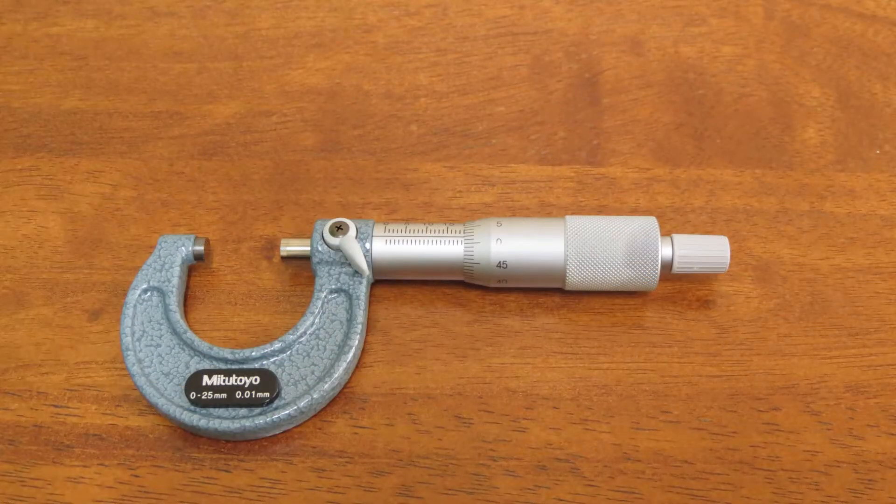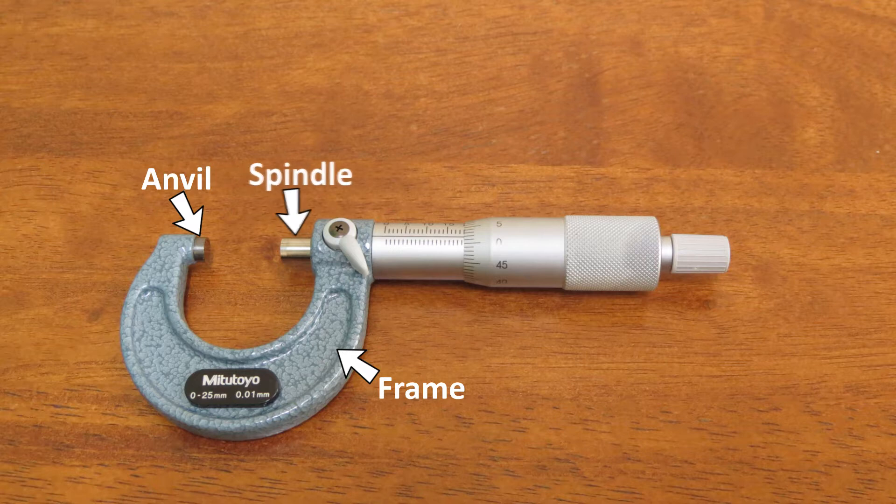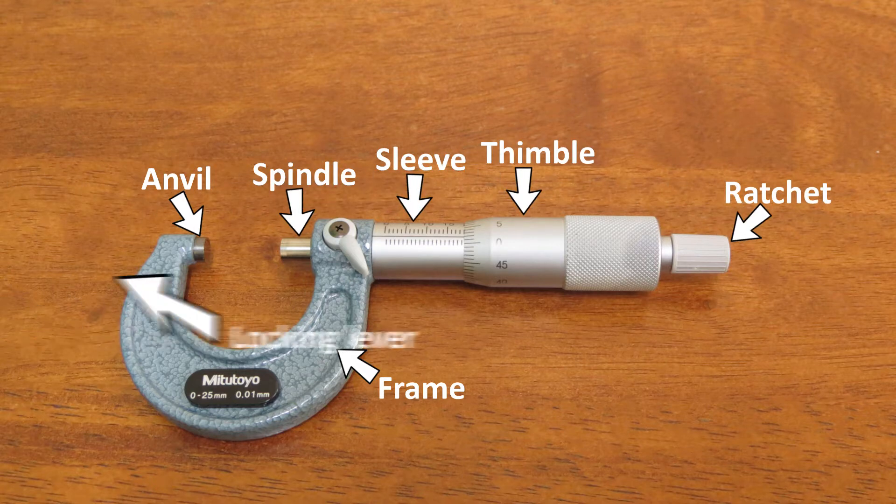First, we will go ahead and introduce the major parts of a micrometer. They are frame, anvil, spindle, sleeve, thimble, ratchet and finally the locking lever.